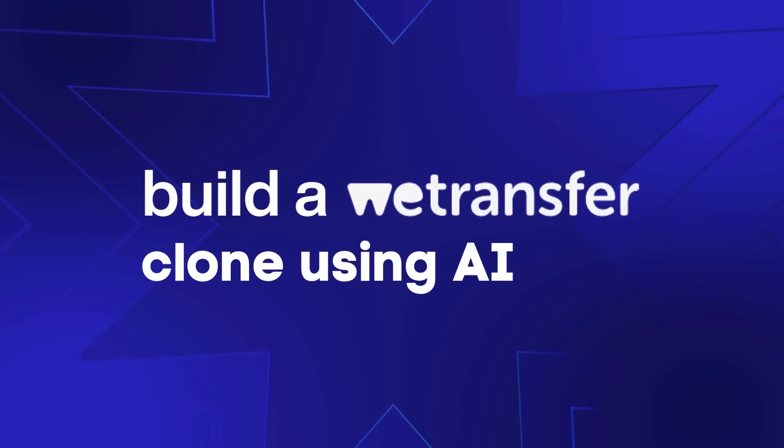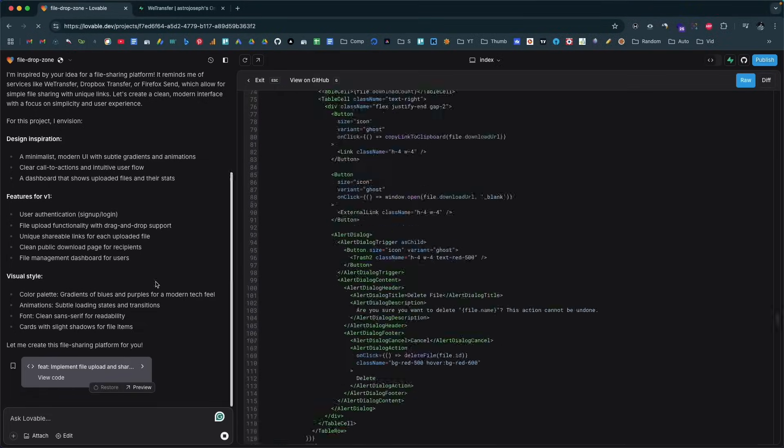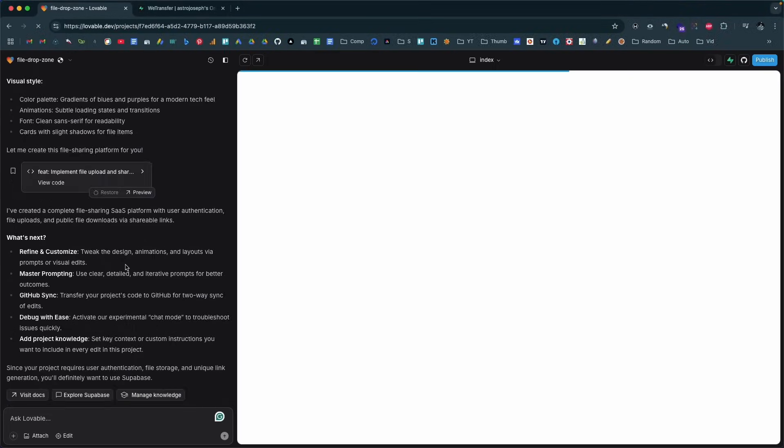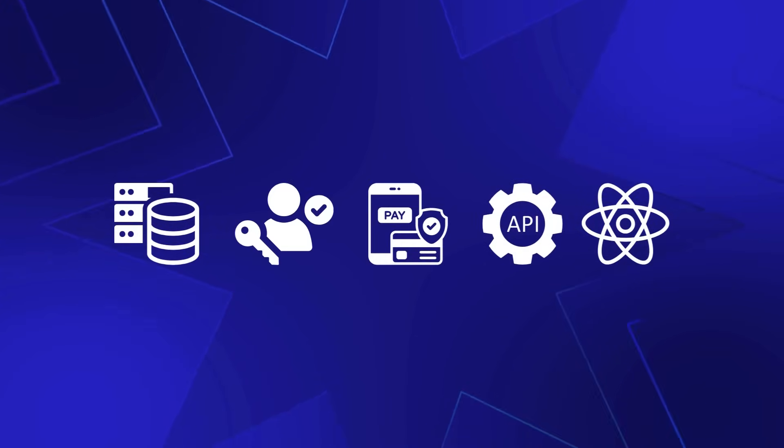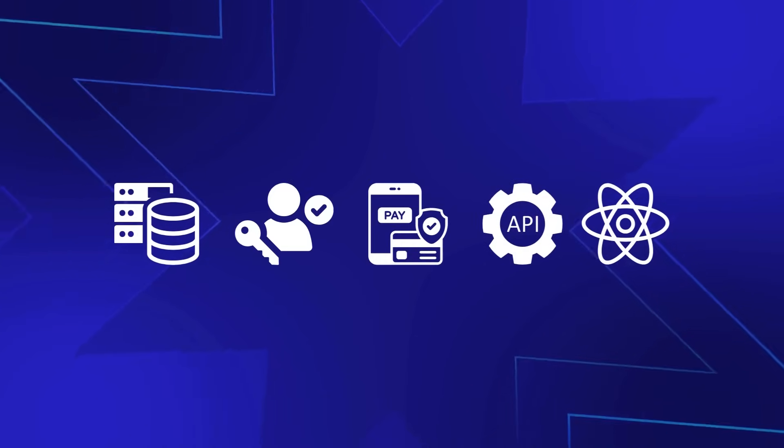Today in this video I'll show you how you can build a SaaS product entirely using AI — and no, you don't need to write a single line of code, or even know the basics of HTML or CSS. All you need to do is prompt: just type out exactly what you want to build, hit enter, and let the AI do the work for you.